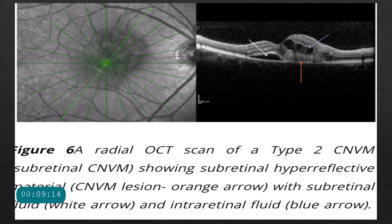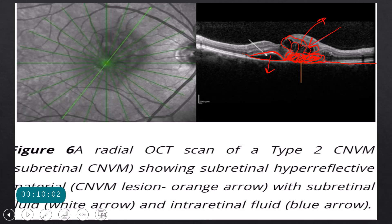Type 2 CNVM occurs above the level of the RPE. You can see the RPE elevated and above it there is hyperreflective material representing the CNVM. This CNVM secretes fluid, producing subretinal fluid below it and intraretinal fluid in the form of cysts. Bruch's membrane is less hyperreflective than the RPE, helping to differentiate the layers. So Type 2 CNVM sits above the RPE, as opposed to Type 1 which is below.